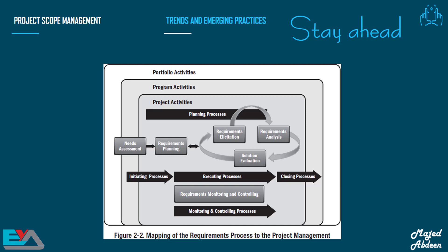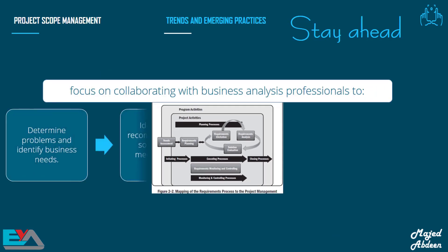Project managers and business analysts must work collaboratively. By understanding each other's roles and responsibilities, they can work together to achieve project objectives, so that the project has a higher chance of being successful. Looking at the project work itself, the emerging trend for scope management shows that the requirements management process starts with a needs assessment, which may begin in portfolio planning, program planning, or within an individual project, as you can see in this diagram.